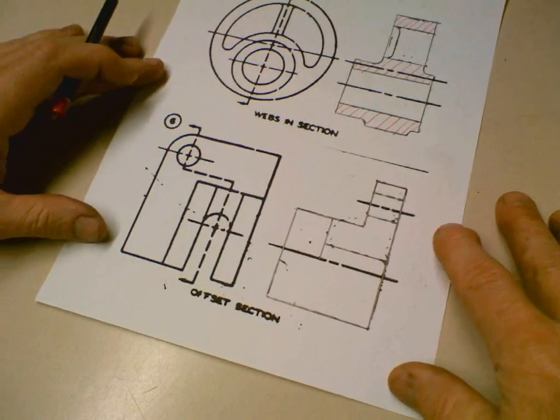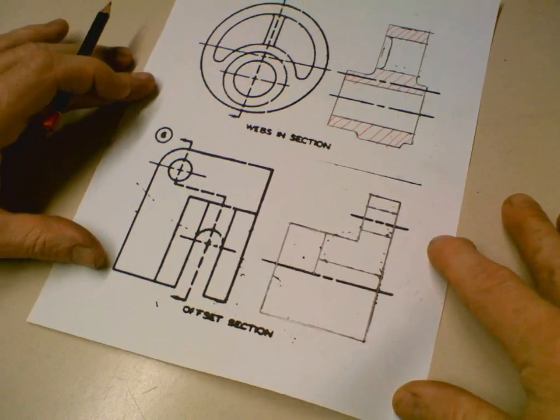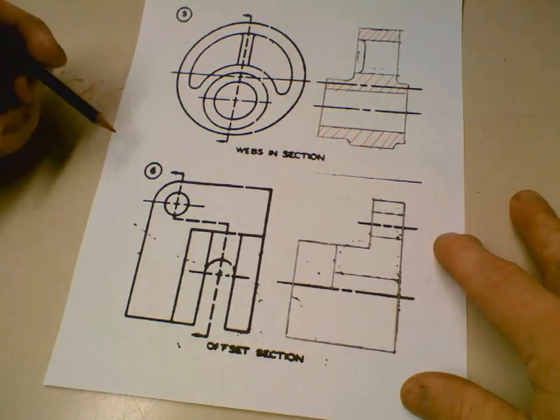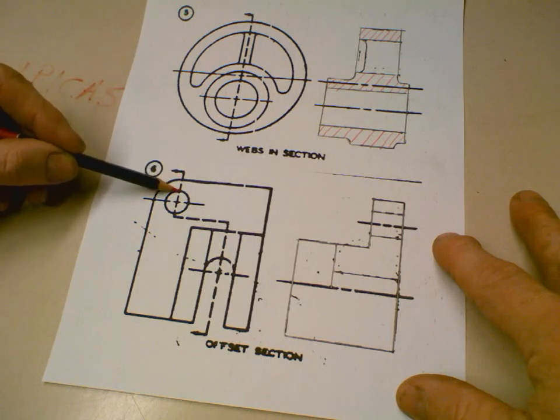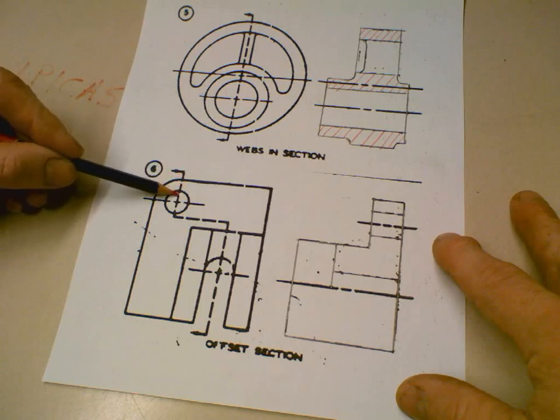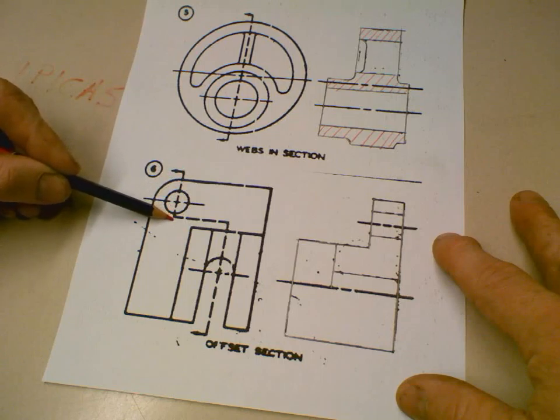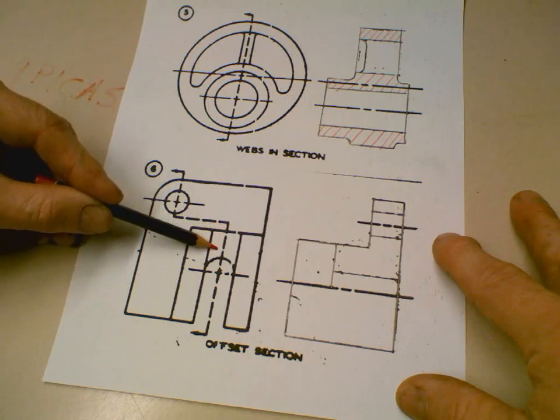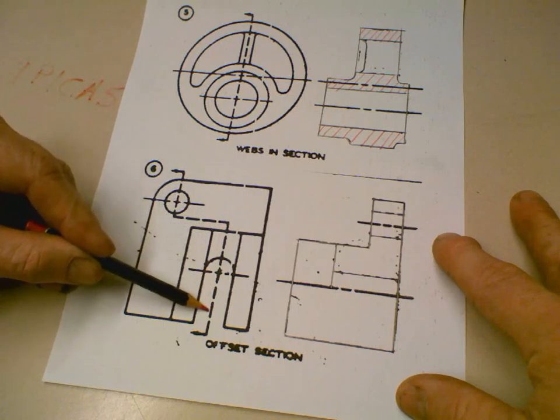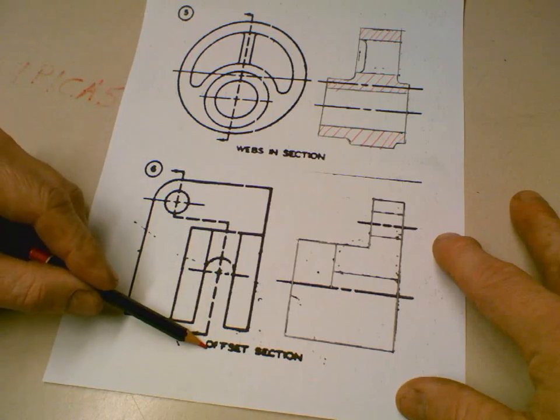Let's look at the next one, offset section. Hopefully you understand the concept of an offset section. The cutting plane here, it's got your arrow, and it cuts through a detail. And if you're going to cut through a circle, cut through the whole circle all the way through it. And then the cutting plane offsets to another position and cuts through that. So that's the whole idea behind an offset section.